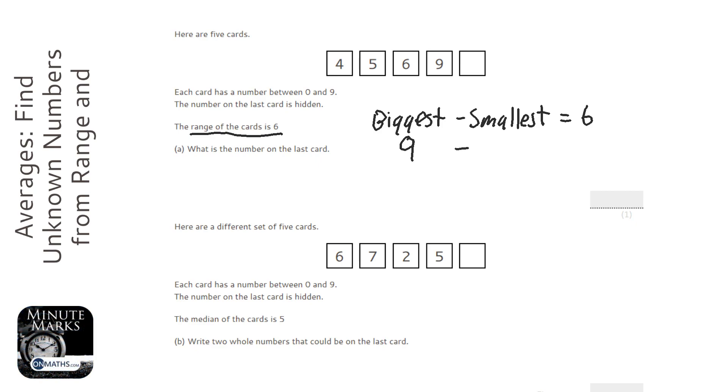We've got to figure out what we take away from nine to get six. So nine take away three is six. So therefore, three needs to be the smallest card.